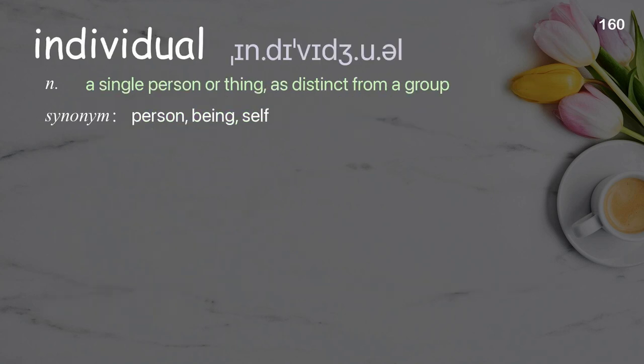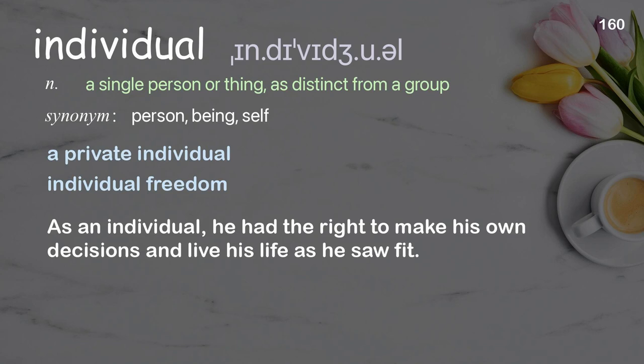Individual: a single person or thing, as distinct from a group. Examples: a private individual; individual freedom; as an individual, he had the right to make his own decisions and live his life as he saw fit.